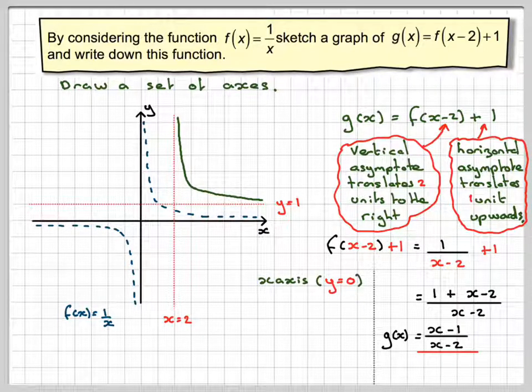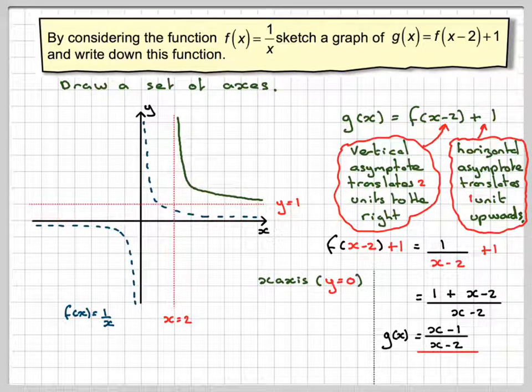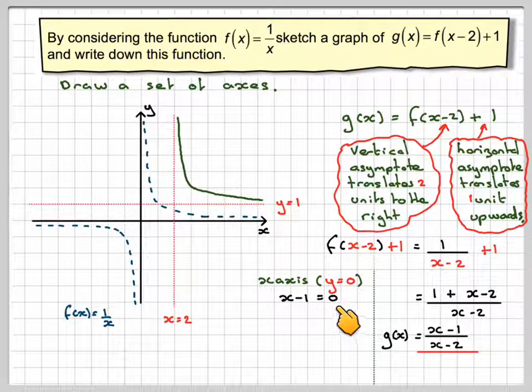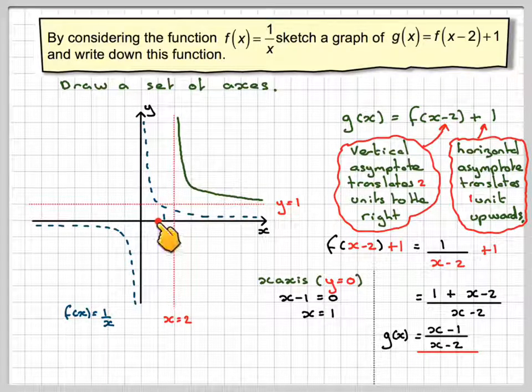For the x-axis, y is equal to 0. So the denominator cannot be equal to 0. It's not possible for it to be equal to 0, so all I need to do is consider that x minus 1 is equal to 0, which gives that x is equal to 1. We'll mark that point on our graph.